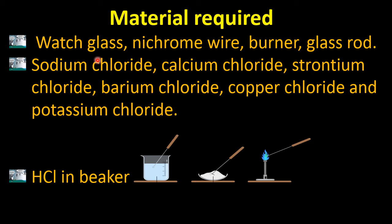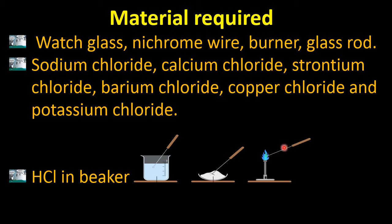A watch glass is this concave-type apparatus. We use it to hold our sodium chloride, calcium chloride, or any type of chemical or salt with which we have to perform the experiment. The nichrome wire is very important — we take a pinch of salt on this wire and then burn it in the flame. That is why we use the nichrome wire.